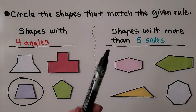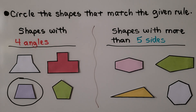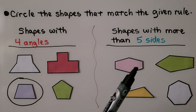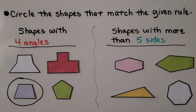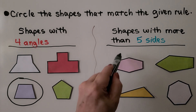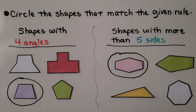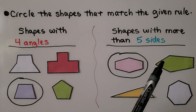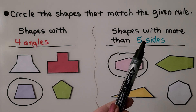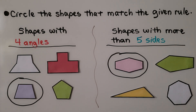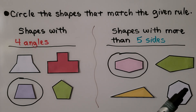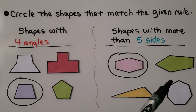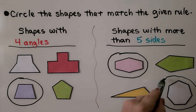Over here it says shapes with more than five sides. This one has one, two, three, four, five, six sides — six is more than five, so this one fits the rule. This one has one, two, three, four, five sides — it's supposed to have more than five, so this one does not fit. Here we have a triangle with three sides — that doesn't fit the rule. And here we have one, two, three, four, five, six, seven sides — so yes, that's a shape with more than five sides. Seven is more than five, so we can circle that one.